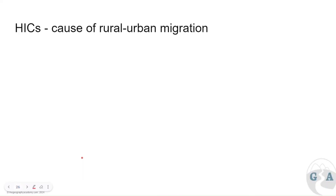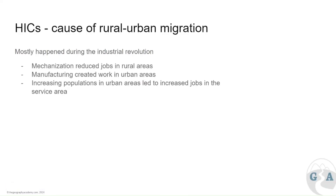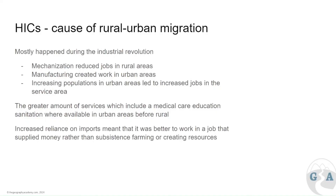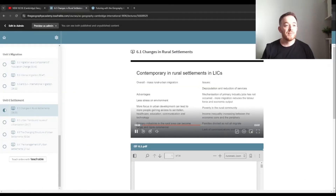In HICs, a key cause of rural-to-urban migration is mechanization of jobs in rural areas. Agriculture shifted to large-scale commercial farming — farming for profit across many fields using limited labor and heavy machinery. Manufacturing and secondary, tertiary, and quaternary industries are concentrated in urban areas, offering higher salaries. Overall there are more jobs and more services like medical care available in urban spaces.